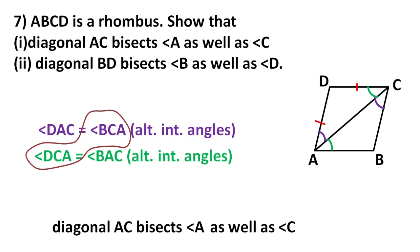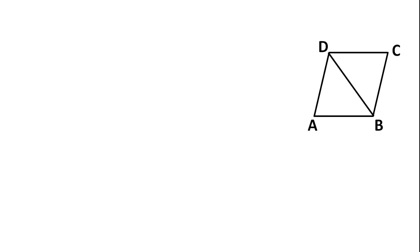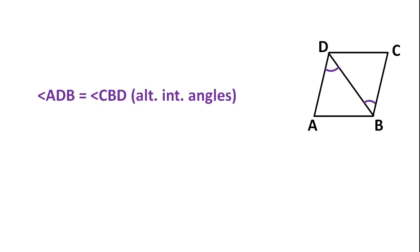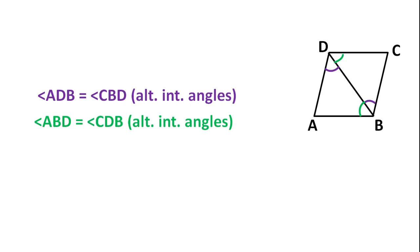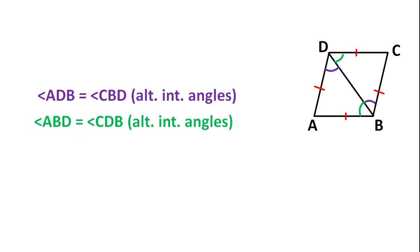Now for the second part, I draw diagonal BD. In the same way, angle ADB and angle CBD are alternate interior angles and are equal. Angle ABD equals angle CBD — these are also alternate interior angles and will be equal. In the rhombus, all sides are equal. In triangle ABD, AD equals AB, so angles opposite to equal sides are equal: angle ADB equals angle ABD.